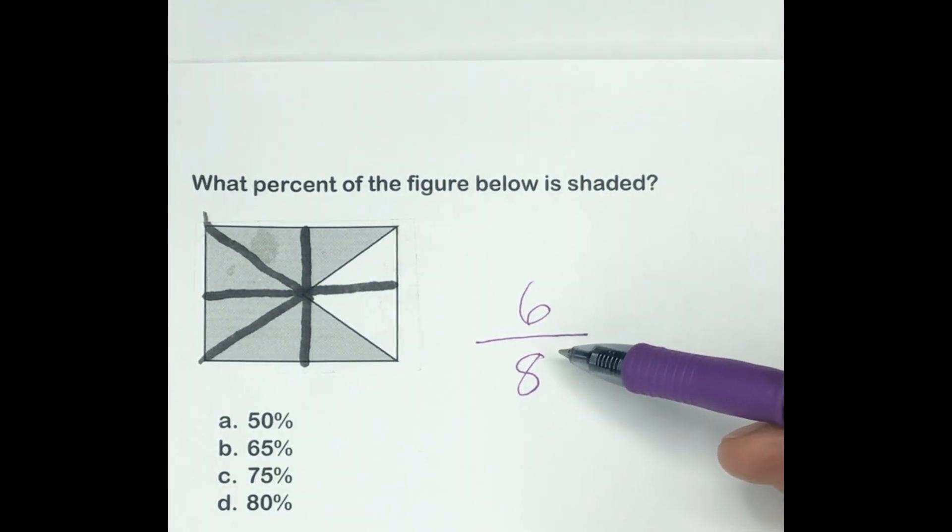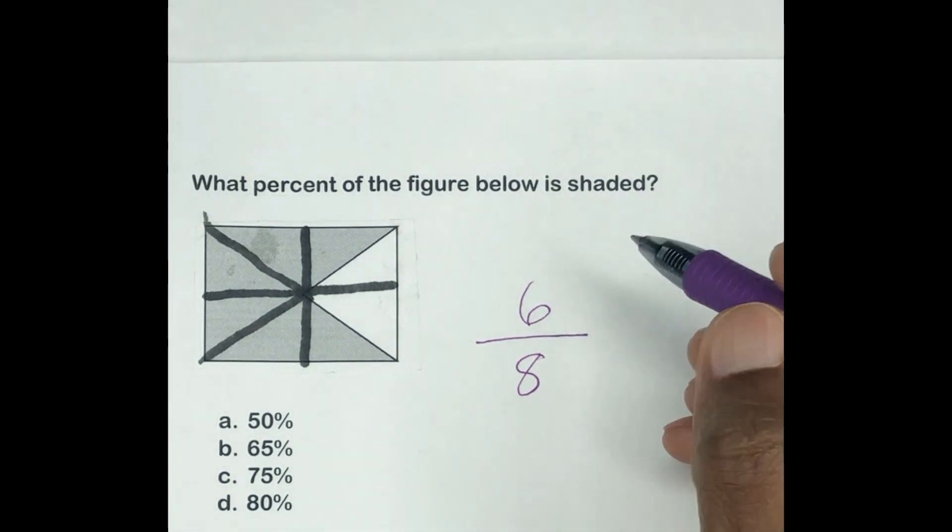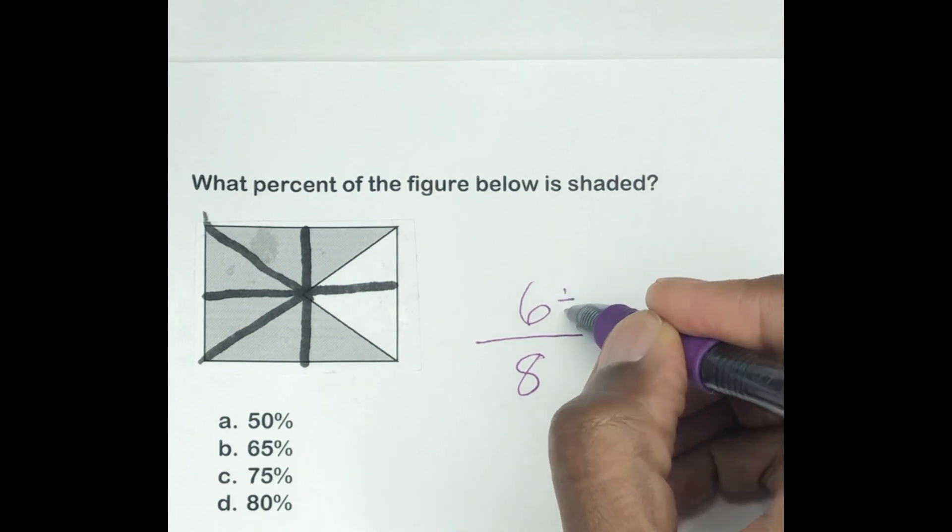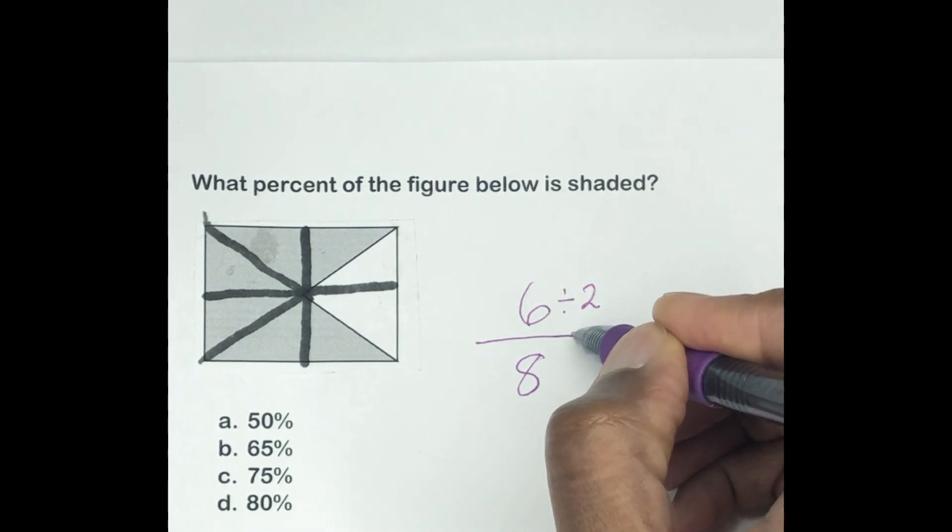So then what we're going to do—obviously with fractions we always have to take our fractions down to the lowest. Okay, so what we're going to do here is 6/8 right now, so we have to reduce it. So what times table can go into 6 and 8? So it's the 2 times table.